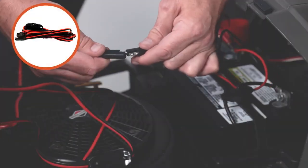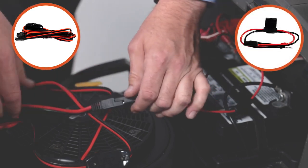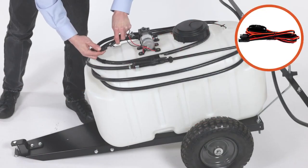Now connect the switch wire harness, Part P, to the battery harness, and route it to the sprayer. Then connect the switch harness to the pump.